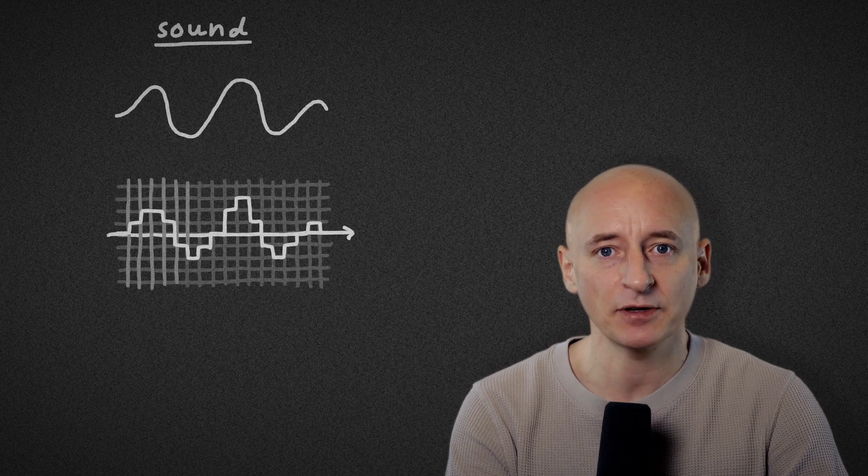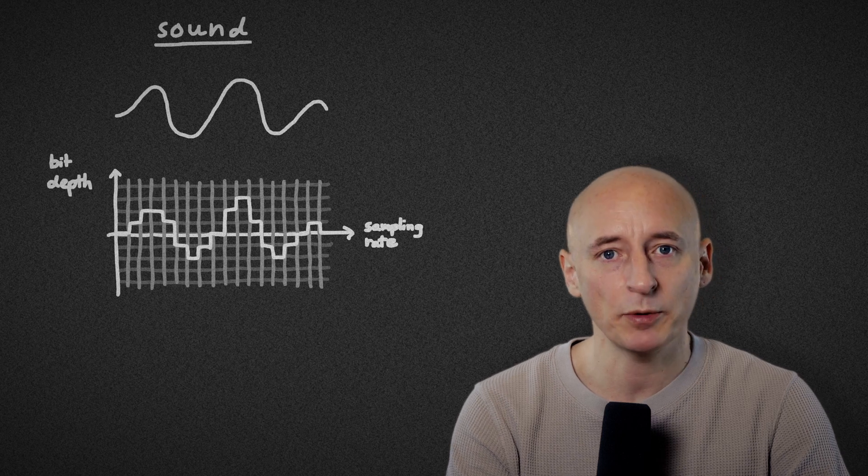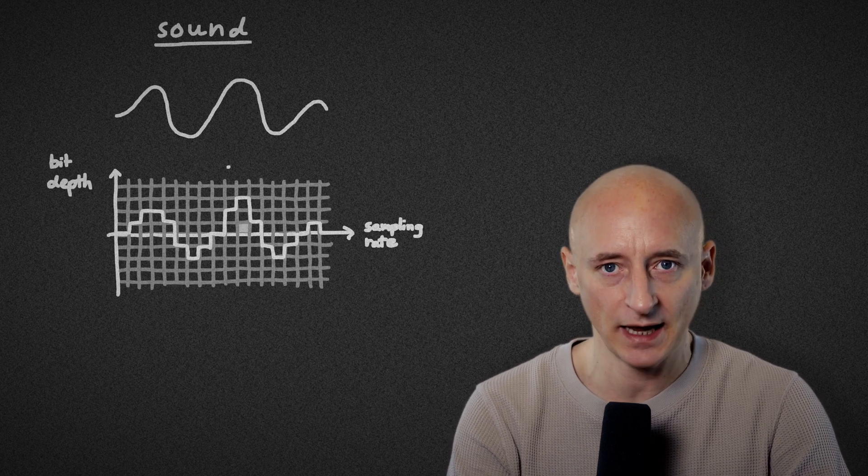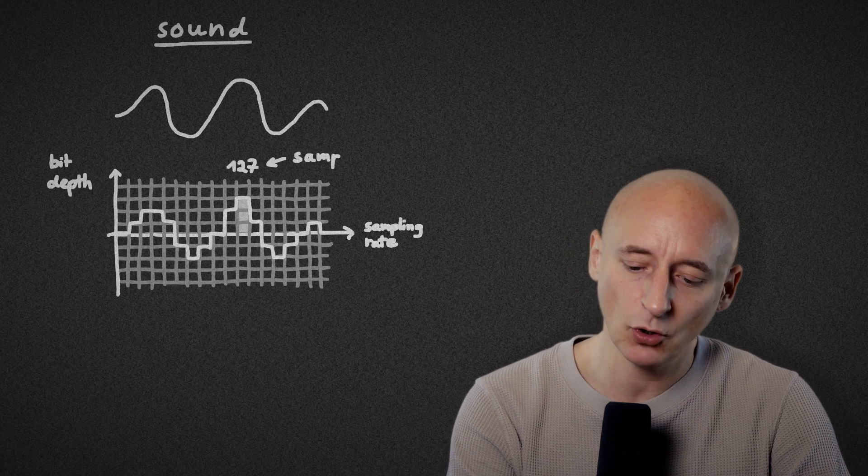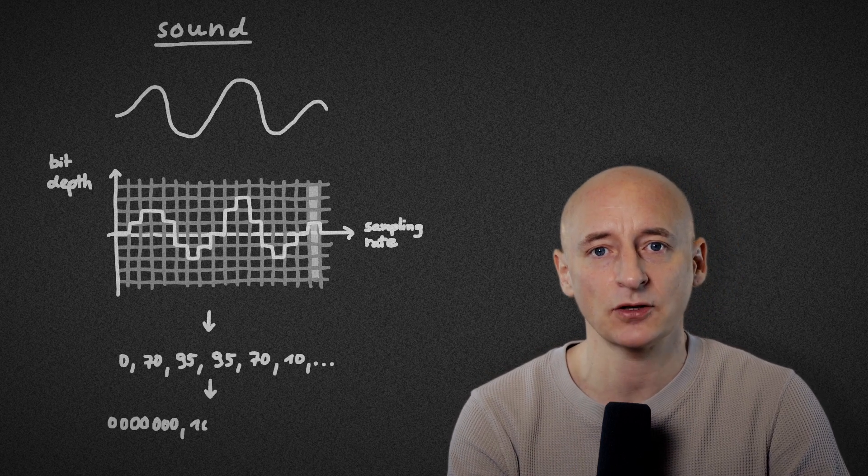The x-axis is subdivided into little time steps. At each of these time steps, we measure the current position on the vertical axis. This number is called a sample. A sound file is basically a list of such samples.